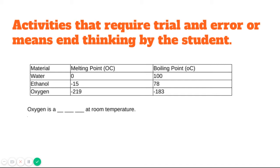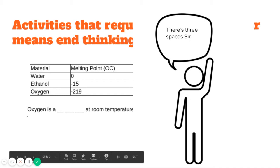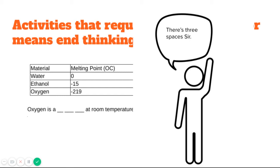This one actually happened in my own classroom and gives an example of students using means-end thinking. I did a little bit of assessment and found students were not very good at using data to interpret whether a material would be solid, liquid, or gas. I found a bought resource with this task on it. I got suspicious during the activity and started asking students questions. A student had written down oxygen as a gas at room temperature, and I asked them why, hoping they would refer to the data. However, the student said there were three spaces available — they had simply guessed it was a gas because there were three spaces to write in, rather than using the data.